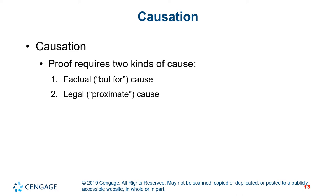Causation means holding an actor criminally accountable for the results of his or her conduct. Proving causation requires proving two kinds of cause: factual cause and legal cause. Factual, or but-for, cause means that if it weren't for an actor's conduct, the result wouldn't have occurred. Legal, or proximate, cause is a subjective question that asks: is it fair to blame the defendant for the harm triggered by a chain of events that his or her actions set into motion? Then there's intervening cause, which is an event that comes between the initial act in a sequence and the end result.